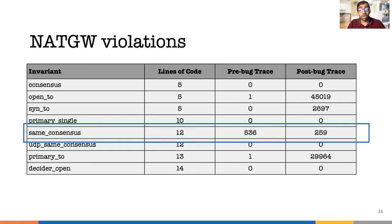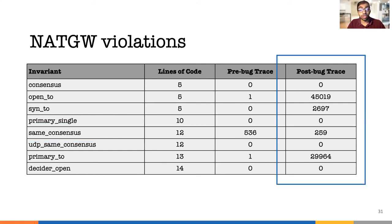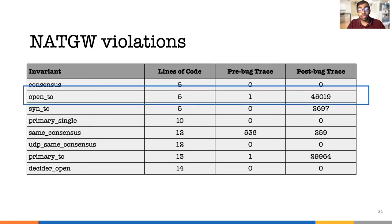After the bug is introduced, Aragog observes many more violations. One of these is OpenTO, the invariant where flows were timing out while in the open state. Although we found the same issue once pre-bug, that was a consequence of eventual consistency. Our operators confirmed that alerts were raised for the correct flows, and it took Aragog milliseconds to find the violations, whereas previously it used to take hours.